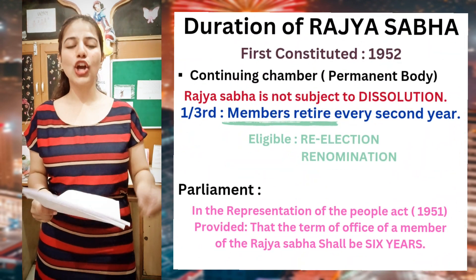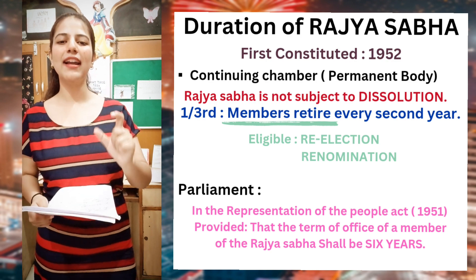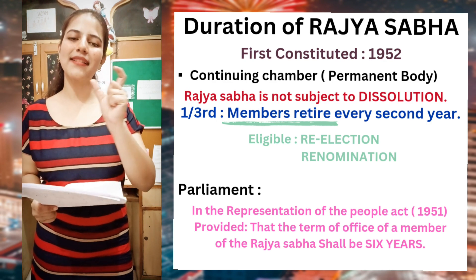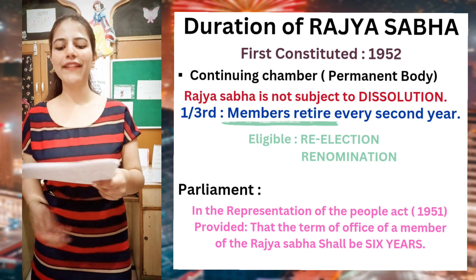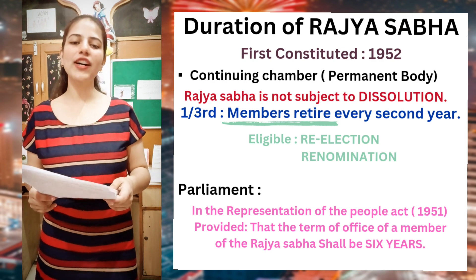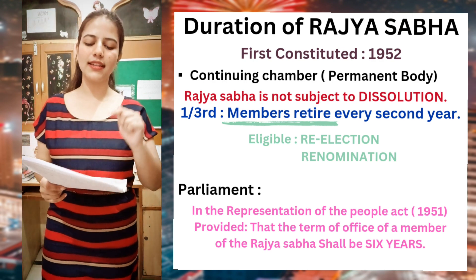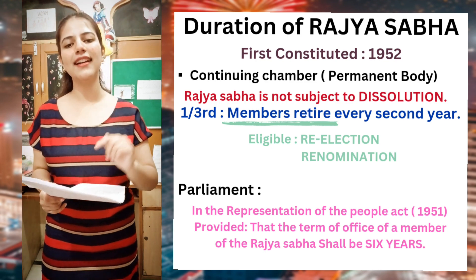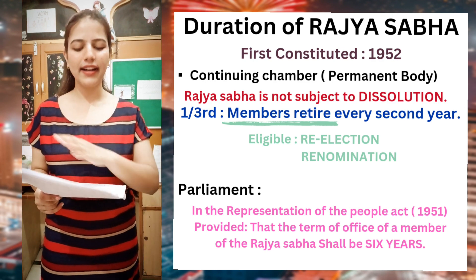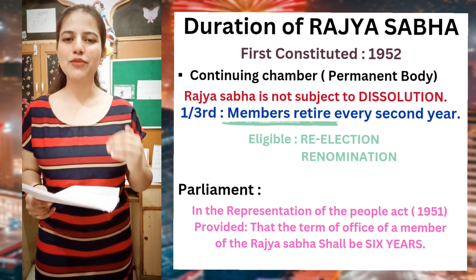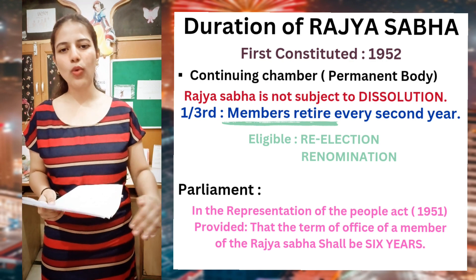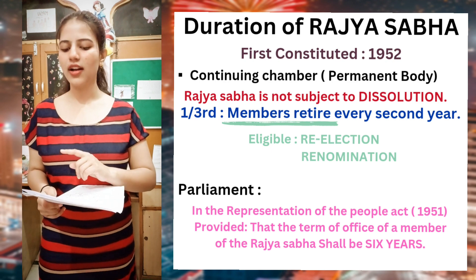After this, the next topic is the duration of the two houses. Parliament has three parts — Lok Sabha, Rajya Sabha, and the President. Now, regarding Rajya Sabha's duration: it was first constituted in the year 1952 and it is a permanent body — it is continuous. That means Rajya Sabha is not subject to dissolution. It cannot be dissolved as Lok Sabha can be before its term is complete.